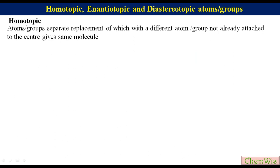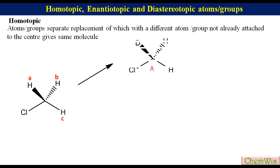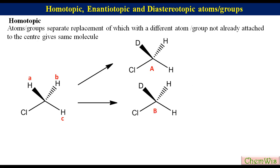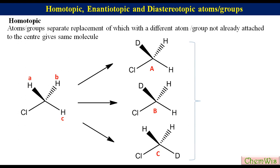In chloroform, there are three hydrogens A, B and C. Replacement of HA with deuterium gives structure A; replacement of HB with deuterium gives structure B; and replacement of HC with deuterium gives structure C. We can see that all three structures A, B, and C are the same. So HA, HB, and HC are homotopic atoms.